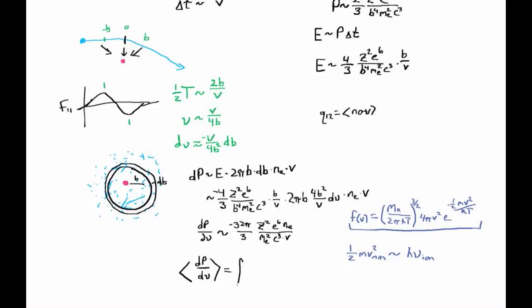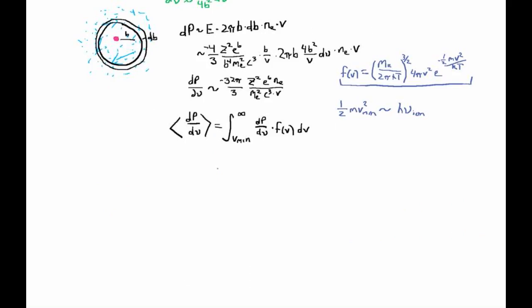Given that, we can now add up all the contributions of all the different velocities of electrons to get an ensemble average of the radiated power versus frequency, which is the integral over all velocities. But as we said, it's not literally all velocities. We have to start at some v_min and go up to infinity of our previous expression for d power d nu times the fraction of electrons that are at this velocity. We add up all those contributions over all the velocities.